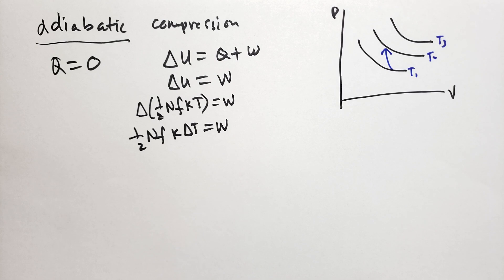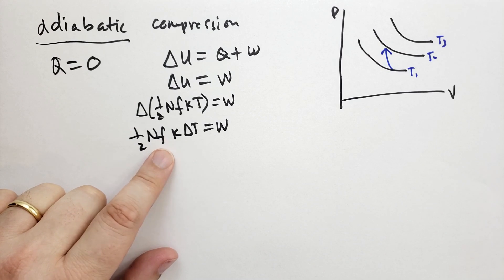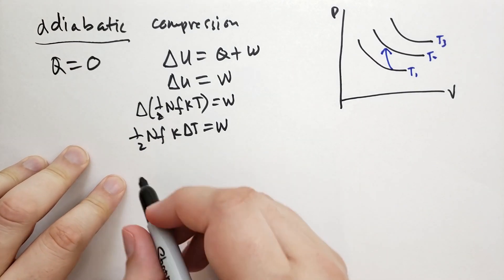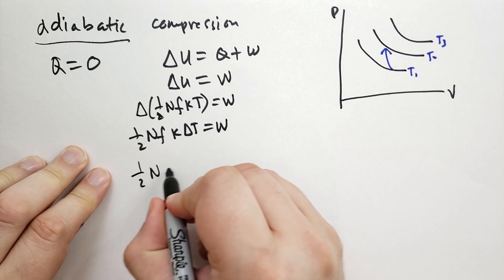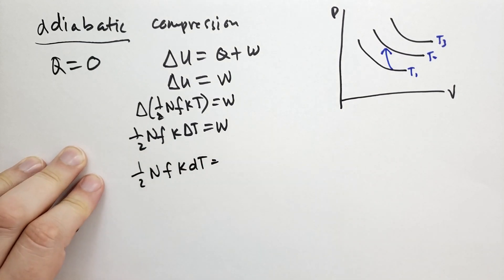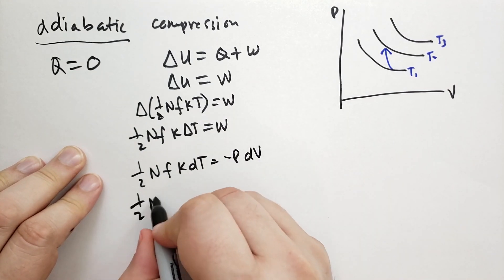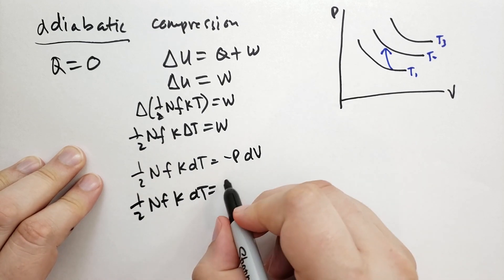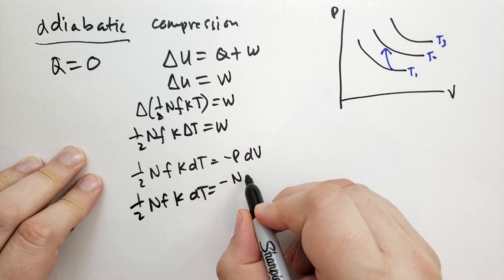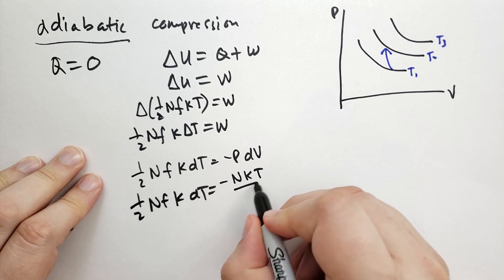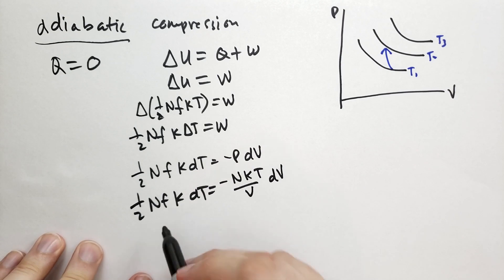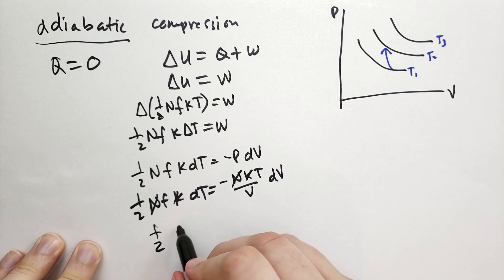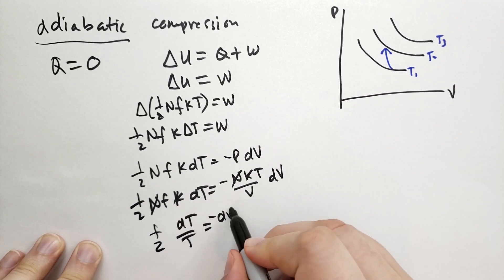So let's derive some formulas here. So we have that the internal energy is one half N K f dT. Let's rewrite this as a differential. So we have one half N f K dT. And the work done on the system is minus P dV. And we can rewrite the pressure using the ideal gas law. So we get pressure is minus NKT over V dV. And then we can cancel out these terms, the N's and the K's.